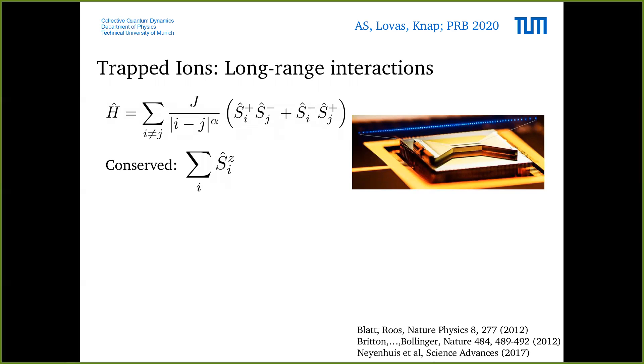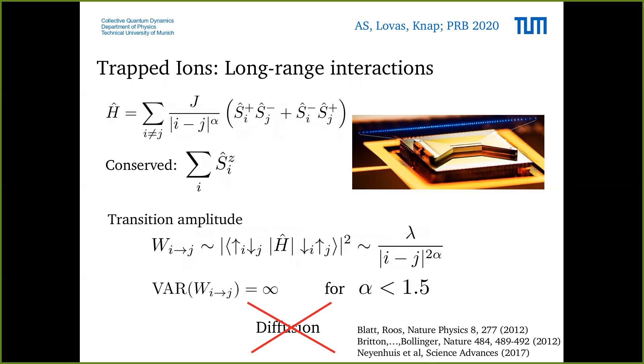The question is what type of hydrodynamics do we observe. To check whether the picture that I drew earlier is correct we need to find out whether the variance of the step sizes is finite. One can think about it in terms of Fermi's golden rule - a flip-flop process as a transition amplitude which goes like one over the distance to the power of two alpha. We find that this transition amplitude will have a variance which is infinite if alpha is smaller than 1.5.